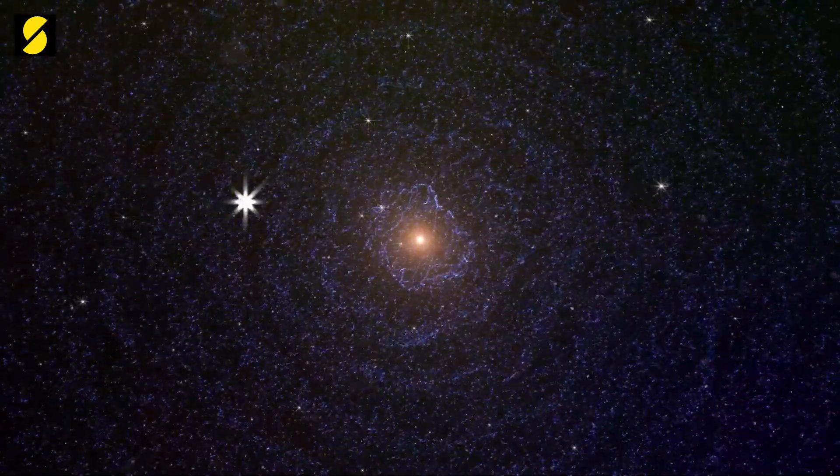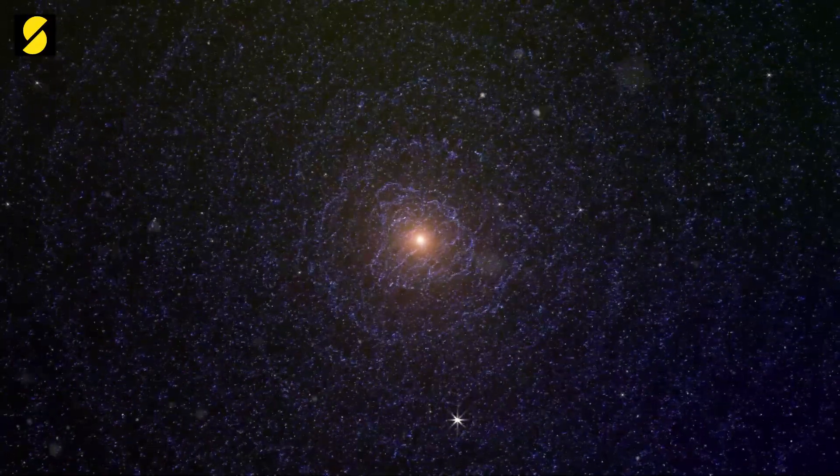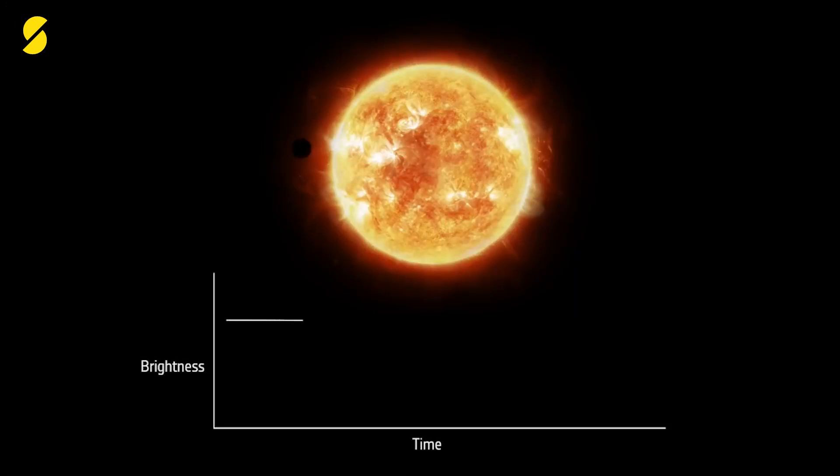NASA's Kepler telescope first noticed the mysterious dipping in the star's brightness at random intervals between 2011 and 2013. Normally, with a planet orbiting its star, the dip in the star's luminosity happens at a regular interval.